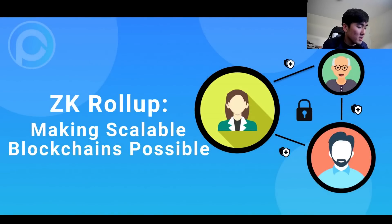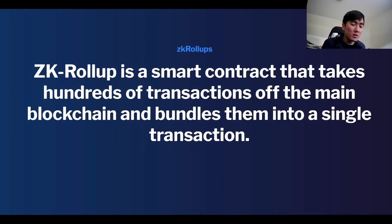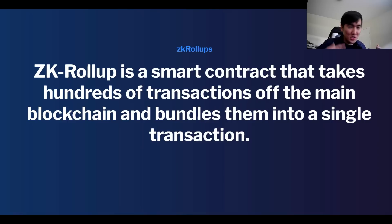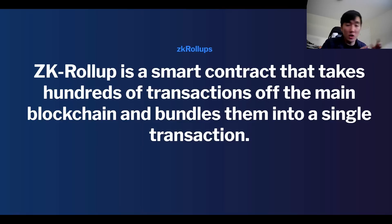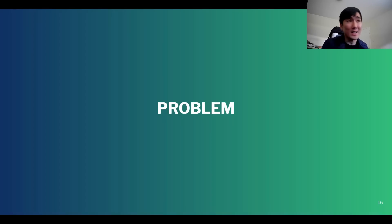From the smart people I've talked to, it seems like ZK rollups are going to be the way for Ethereum to scale. The general simplification of ZK rollups is that it's essentially a smart contract that takes hundreds of transactions off the main blockchain and bundles them into a single transaction. Thousands of transactions get rolled up and bundled together and released back to the main chain. Instead of paying gas for your own transaction, you share the gas cost with hundreds or thousands of other people, so in theory transaction costs should go down.